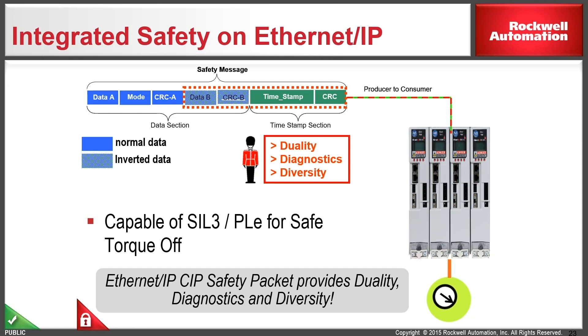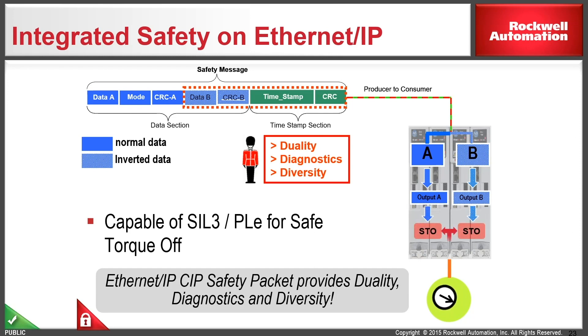This all gets packaged up into a message, gets sent down over to the drive, and at the drive level there are two separate processors, one looking at data A, the other looking at data B. They basically solve their logic, look to see what the output state should be. They then compare that information. If they match, the drive goes into safe torque off mode or run mode depending on what the drive was being told to do. If the messages happen to differ or there's an issue with the checksums or the message somehow gets corrupted, the drive would then fault and go to the safe state.